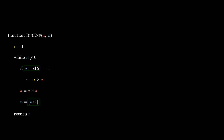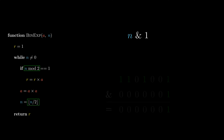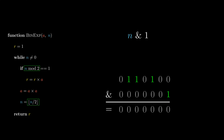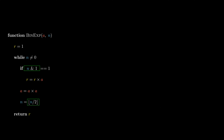Side note: these two calculations can be replaced by bitwise operations. Calculating the remainder of n divided by 2 is equivalent to calculating bitwise AND of the two numbers. Calculating the floor of n divided by 2 is equivalent to right shifting n by 1 bit.